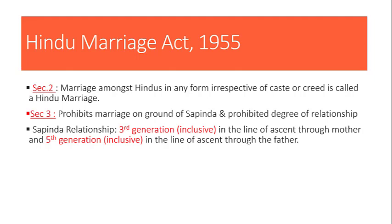Father ke side se, ye fifth generation tak count ki jaati hai. Father ke father, father ke father ke father — fifth generation tak jo marriage hai, it is prohibited under the sapinda relationship. Confusion avoid karne ke liye yaad rakhna hai: mother ke side se third generation inclusive hai, aur father ke side se fifth generation inclusive hai. Inclusive word ka matlab hai ki mother aur father ko bhi include karke generations count ki jaati hain — ye inclusive hai, exclusive nahi.